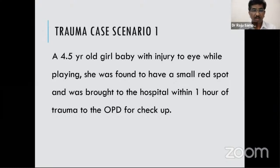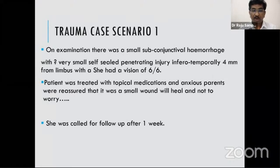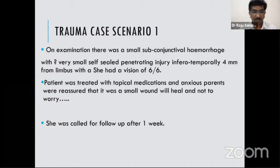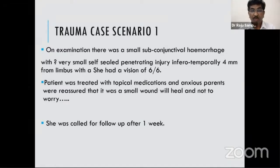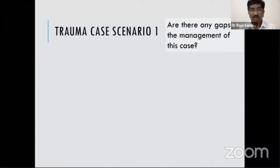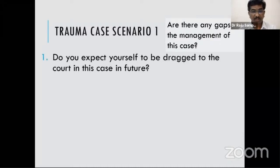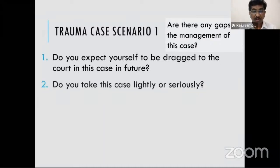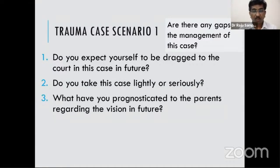This is the first patient — a four-and-a-half-year-old girl who came with injury to the eye. She was found to have a small red spot and was brought to the hospital within one hour of trauma. On examination, there was a very small subconjunctival hemorrhage and probably a small self-sealed penetrating injury about four millimeters from the limbus. The child had a vision of 6/6. The patient was treated with topical medication. The parents were very anxious and were reassured that it's a small wound that will heal. The child was called for follow-up after one week. Do you feel there are any gaps in the management of this case? Do you expect to be dragged to court? And what do you tell the patient regarding vision prognosis?